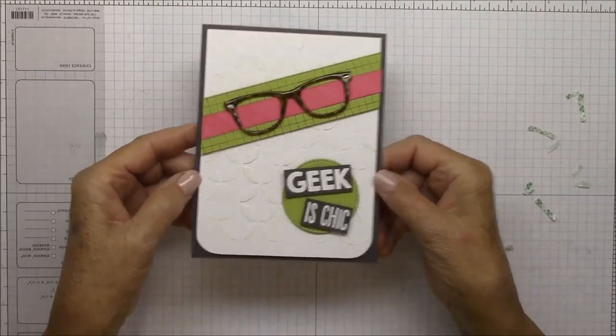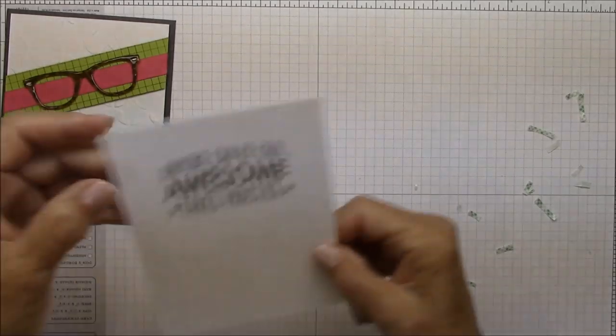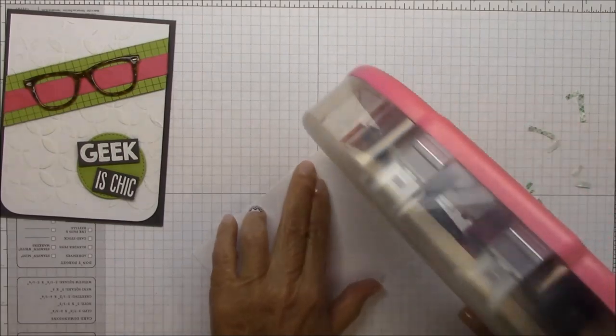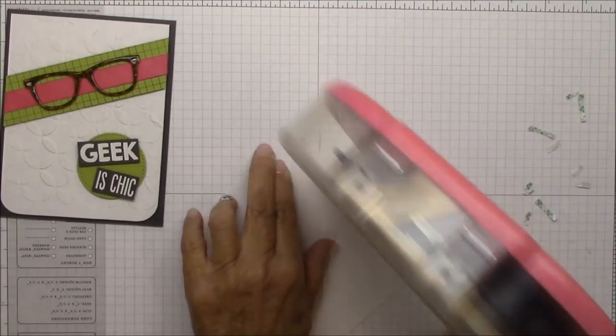I just love the tortoise shell look. For the inside, I stamped a sentiment from Clearly Sentimental Birthday Chalkboard Greetings. And I'm going to put that on the inside.